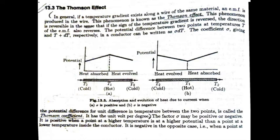The coefficient sigma may be positive or negative. It is positive when a point at higher temperature is at higher potential than a point at lower temperature inside the conductor. And sigma will be negative in opposite case. That is, when a point at higher temperature is at lower potential than a point at lower temperature.